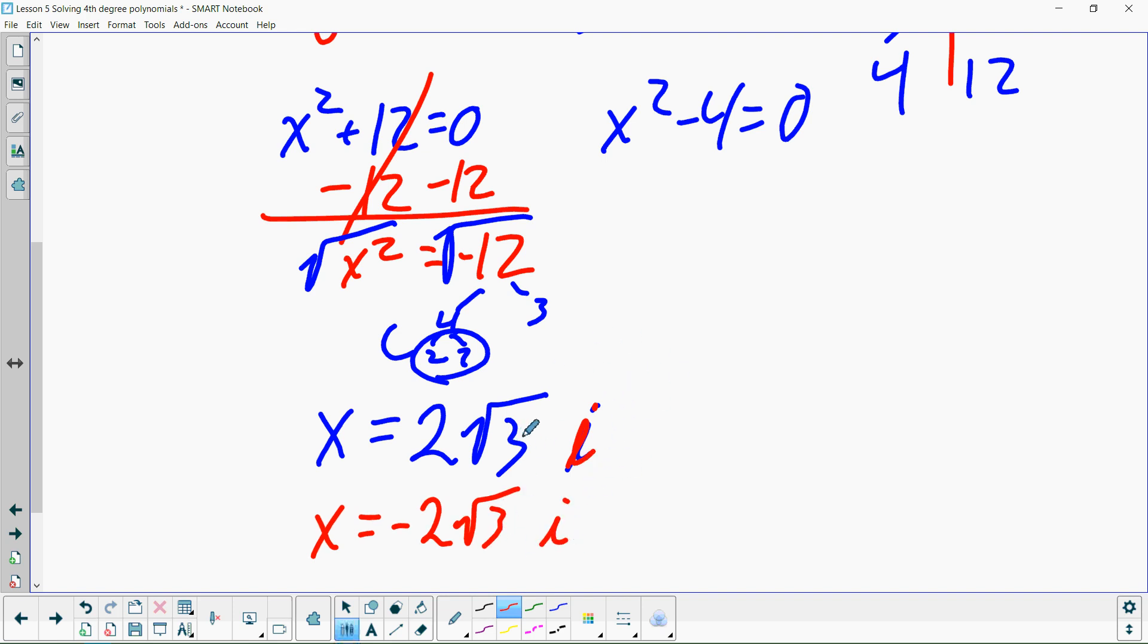Then, we have to do the second half. We have to solve this equation. So, we're going to add four on both sides. So, we get x squared equals four. Take a square root on both sides. x equals two. And, x equals negative two. And then, these are your four roots.